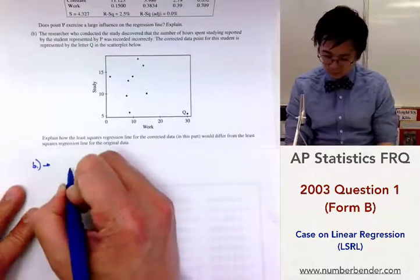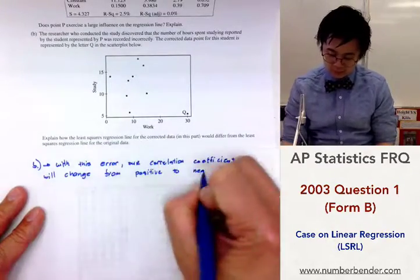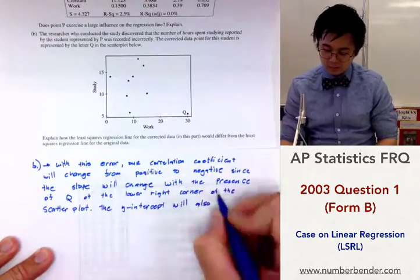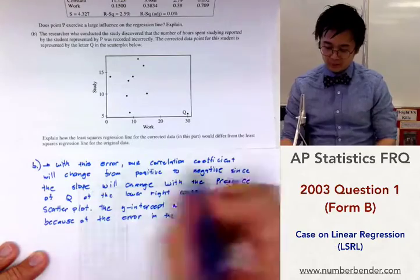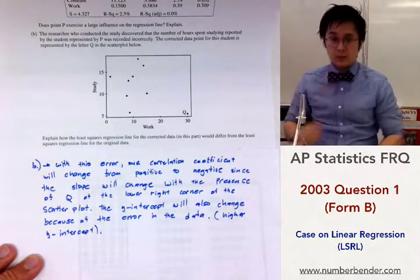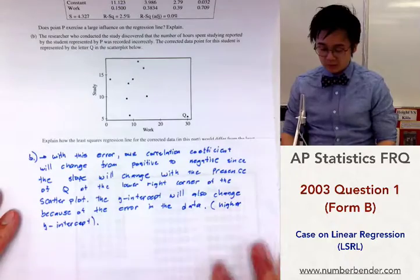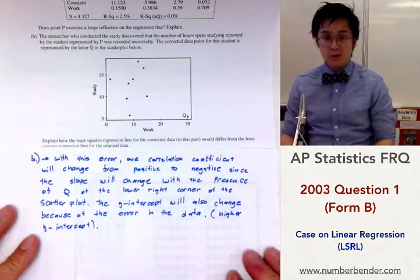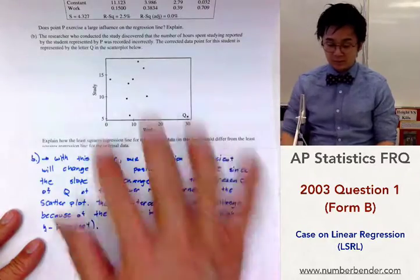So we can write out our observation by showing the difference on the direction of your association based on the presence of q down here as opposed to being up here. And this is how our change will appear in our interpretation based on the error that happened in the problem.